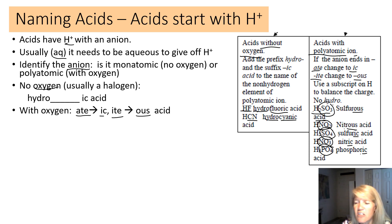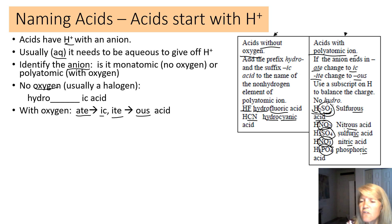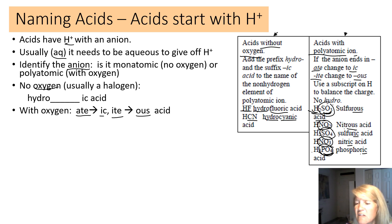You need to balance the charge. Hydrogen is +1, so for H2SO3, sulfite is minus two — you need two hydrogens. For H3PO4, phosphate is minus three — you need three hydrogens. Always balance the charge when writing acid formulas.